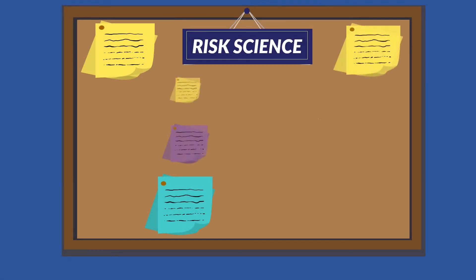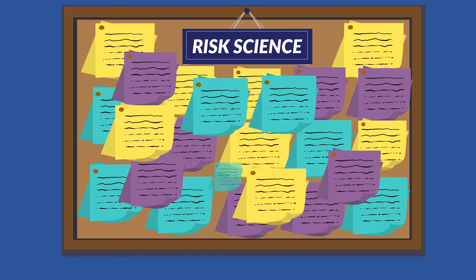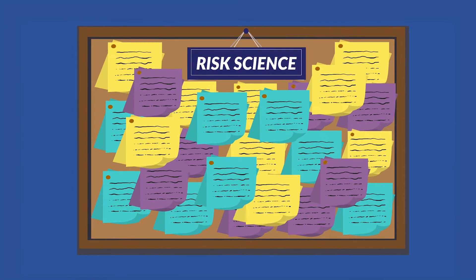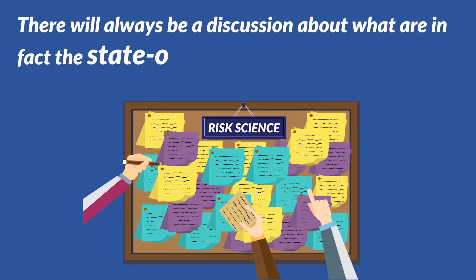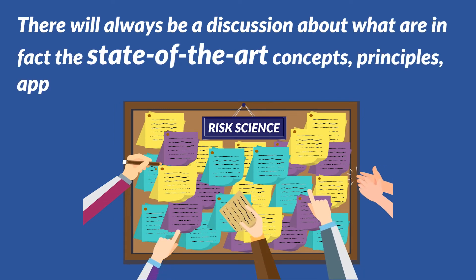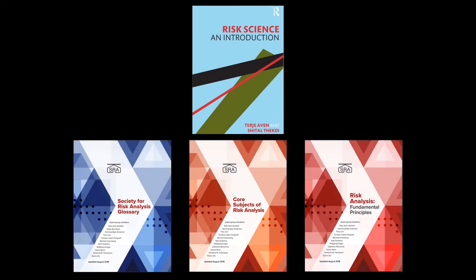As risk science covers a wide variety of topics and issues, it is impossible to cover them all. There will always be a discussion about what are in fact the state-of-the-art concepts, principles, approaches, methods and models of a science. The present book builds on recent work conducted by the Society for Risk Analysis and related research, which point to key risk science terminology, core subjects and fundamental principles.